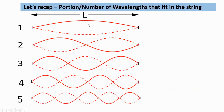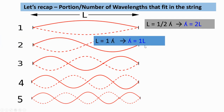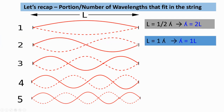Now let's recap and look at the number of wavelengths that fit in this string. For case one, where we pluck in the middle, we can fit half of a wavelength. So if I know the length of this string, I can determine the wavelength, because the wavelength will be two times the length of this string. For case two, the length of the string fits one complete wavelength, so the wavelength equals the length of the string.